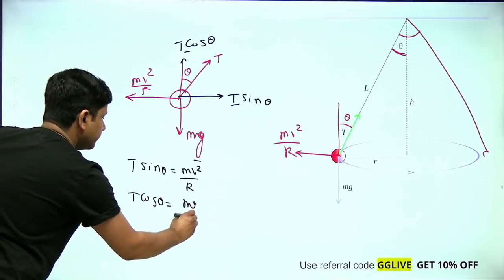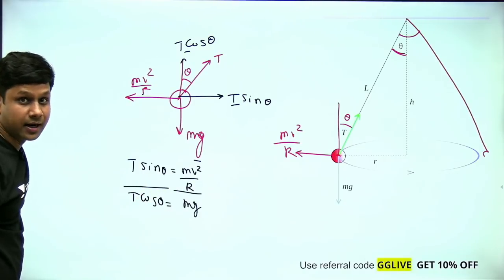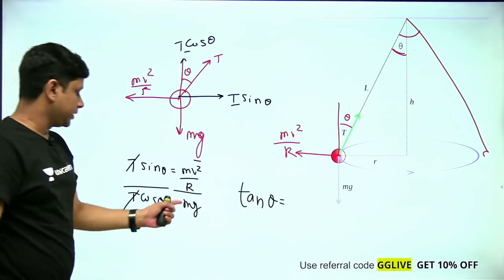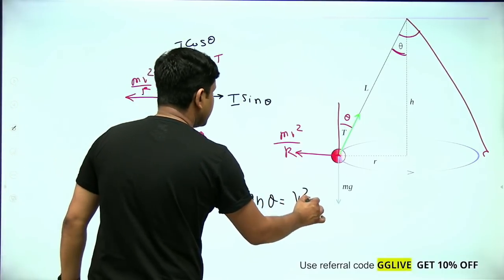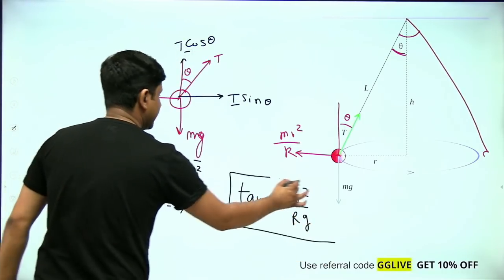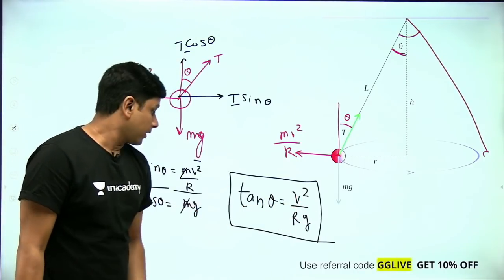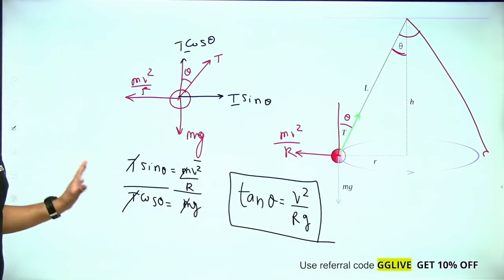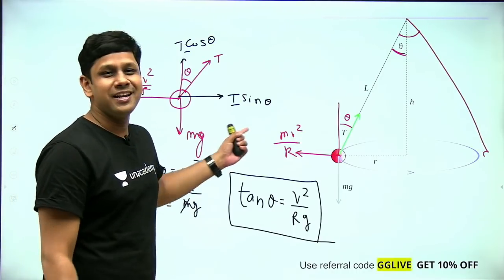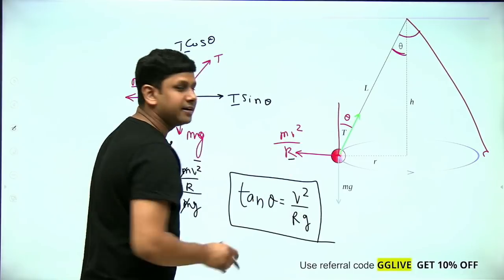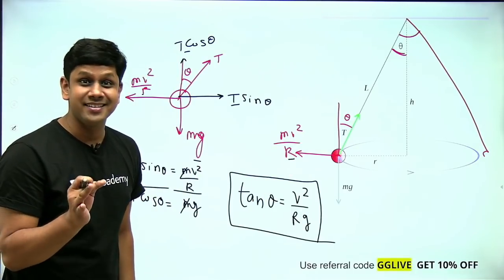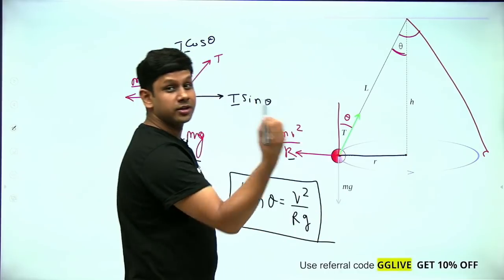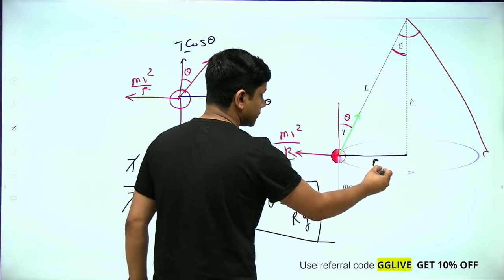From these two equations, dividing: tan θ = v²/rg. Tension cancels, mass cancels, sin/cos gives tan θ. Here r is the radius of the horizontal circle — not the length of the string. This is an important distinction.